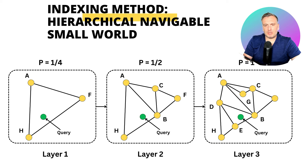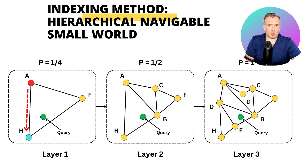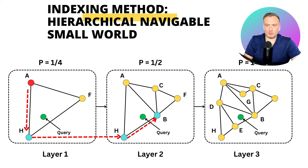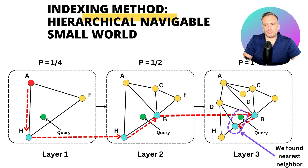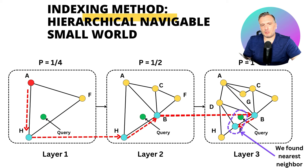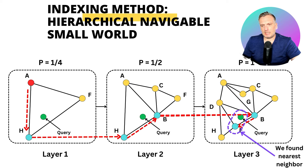When we have a query vector, it belongs to each of the layers. We first start at the layer with the lowest probability, and the search happens exactly the same way as Navigable Small World. When we reach the closest neighbor in that layer, we go to the next layer and continue the search. At first we traverse the space going through long connections, and then, going layer to layer, we go through connections that are shorter and shorter, traversing longer distances at the beginning and refining the traversal when looking at the nearest neighbor.